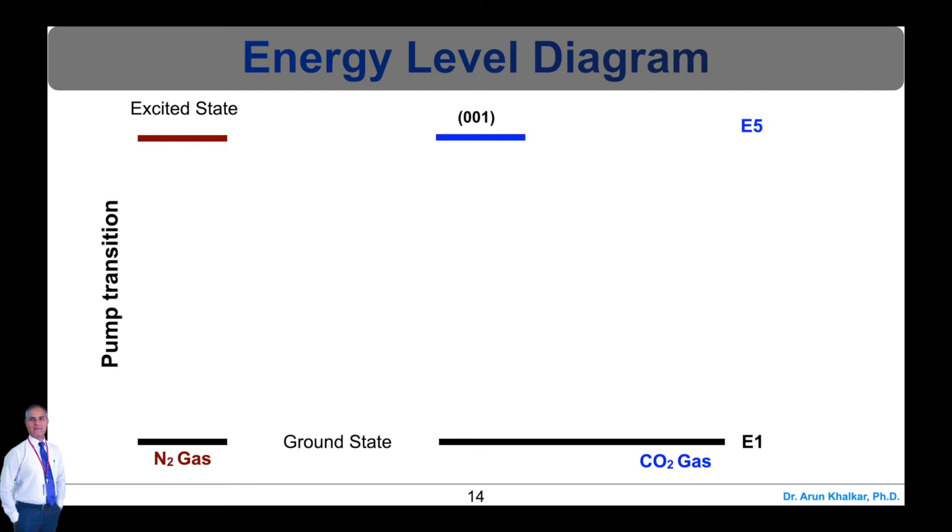So let's see the pumping mechanism. When current passes through the mixture of gases, the N2 molecules get excited to the metastable state. The excited N2 molecules cannot spontaneously lose their energy and consequently the number of N2 molecules at the metastable state level builds up. The N2 molecules undergo inelastic collisions with ground state CO2 molecules and excite them to the E5 level.